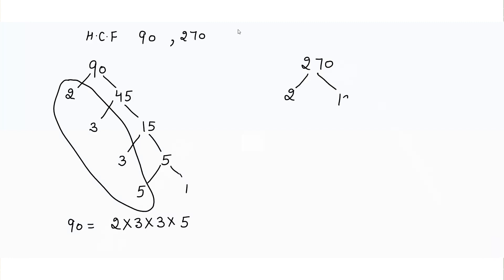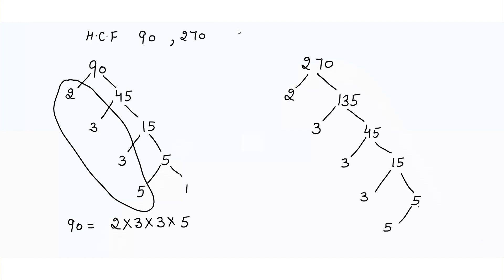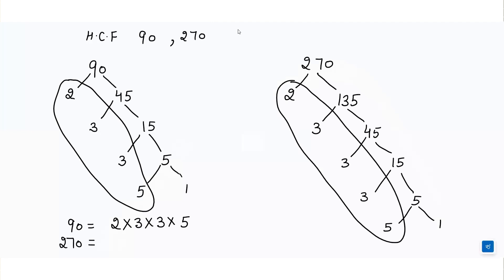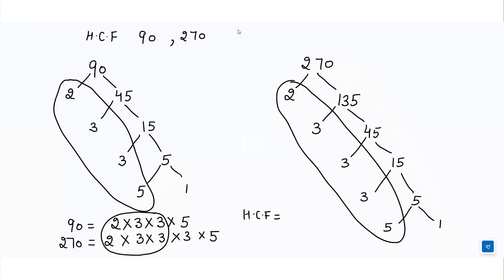Similarly for 270, dividing by 2 gives 135, divide 135 by 3 gives 45, divide 45 by 3 gives 15, divide 15 by 3 gives 5, divide 5 by 5 gives 1. So 270 = 2 × 3 × 3 × 3 × 5. The HCF will be the numbers common to both 90 and 270: 2 × 3 × 3 × 5 = 90. So the HCF of 90 and 270 is 90.